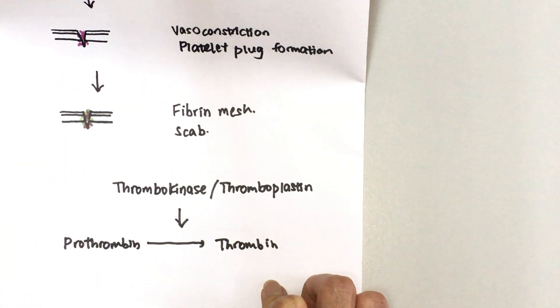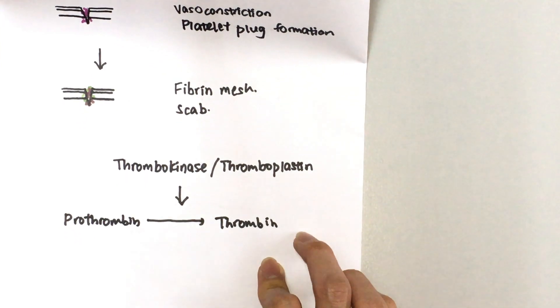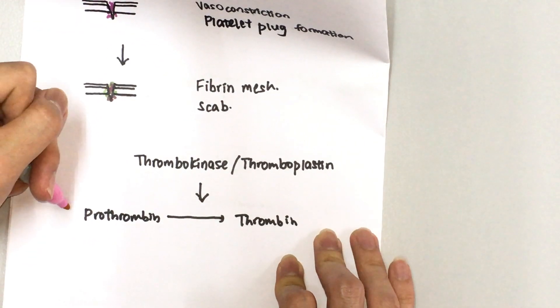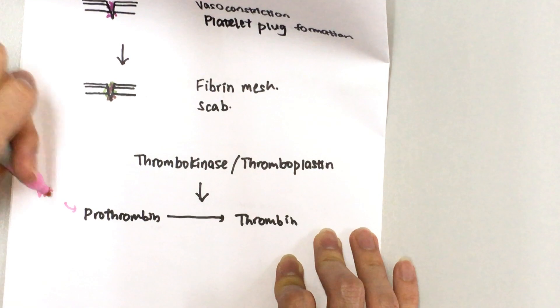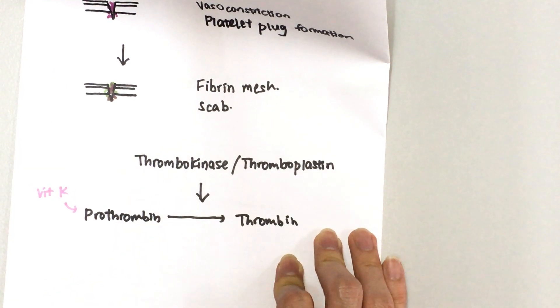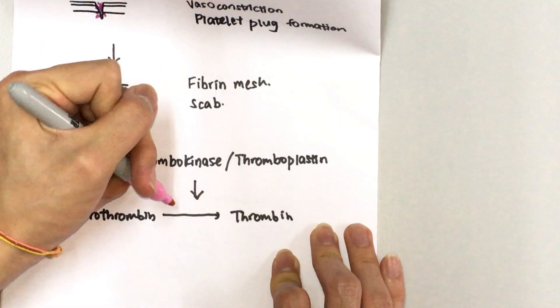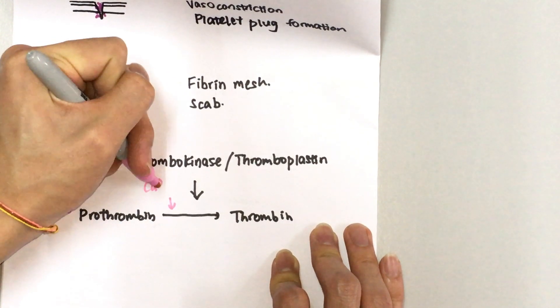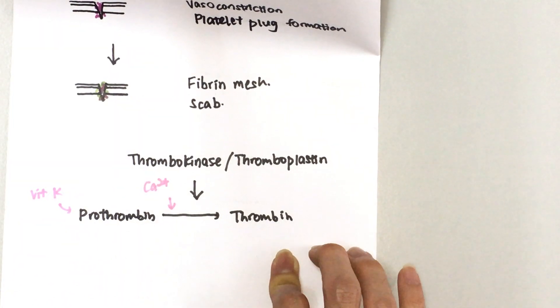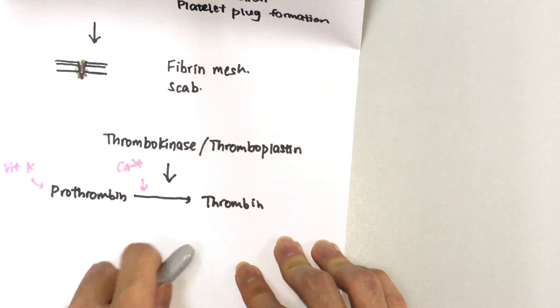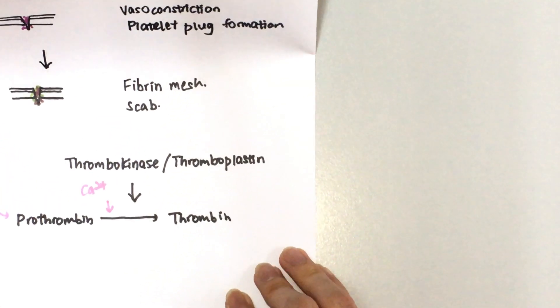Prothrombin is a plasma protein that's found in your blood. And to produce prothrombin you need vitamin K. And this process of converting prothrombin to thrombin, you need another thing which is calcium ion. Alright, so now you have thrombin, so what's going to happen here is that...